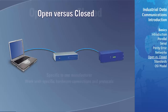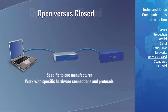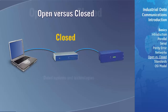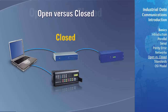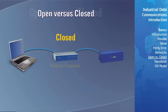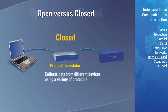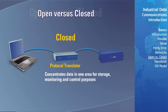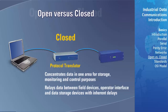Networks that are specific to one manufacturer and work with specific hardware connections and protocols are called closed systems. These systems and technologies are typically dated and were developed before standardization, or when it was considered unlikely or undesirable to include equipment from other manufacturers. In many of these dated configurations, a single device acts as a protocol translator, collecting data from different field devices using a variety of protocols. The data concentrator relays data back and forth between the field devices, an operator interface, and data storage devices with inherent delays.